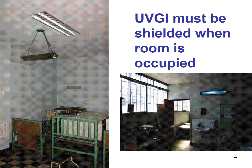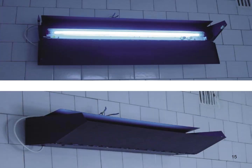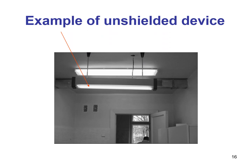UVGI must be shielded when the room is occupied. The device on the left is shielded to prevent eye damage, while the right one is not. Units with flap-down designs may be used when there is no one in the room; when the space is occupied, the flaps must be raised to provide shielding. The picture shows a fully shielded UV lamp in a laboratory — it is turned on only when laboratory personnel leave.